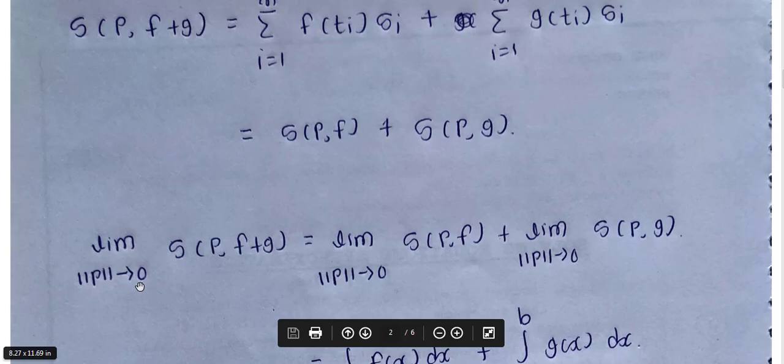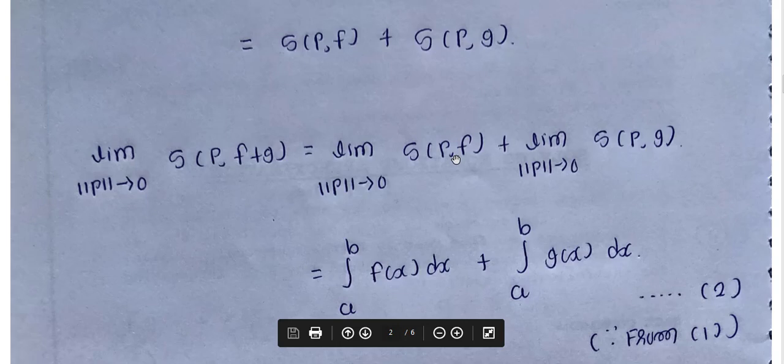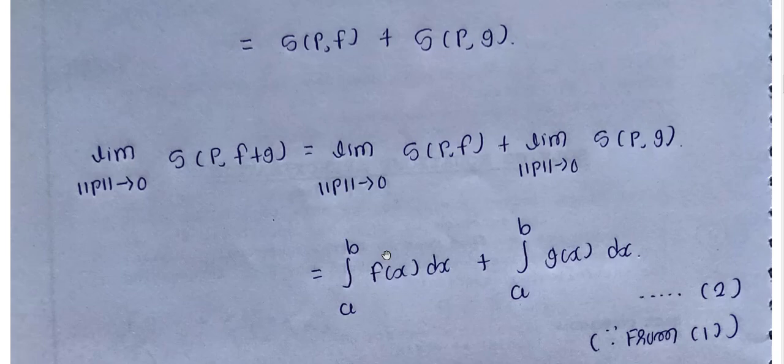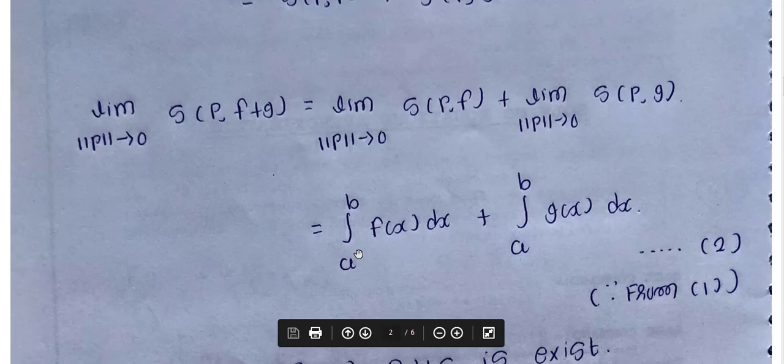Now applying limits: limit as norm P tends to 0 of S(P, f+g) equals limit as norm P tends to 0 of S(P, f) plus limit as norm P tends to 0 of S(P, g). By equation number one, limit as norm P tends to 0 of S(P, f) equals the integral from a to b of f(x) dx.